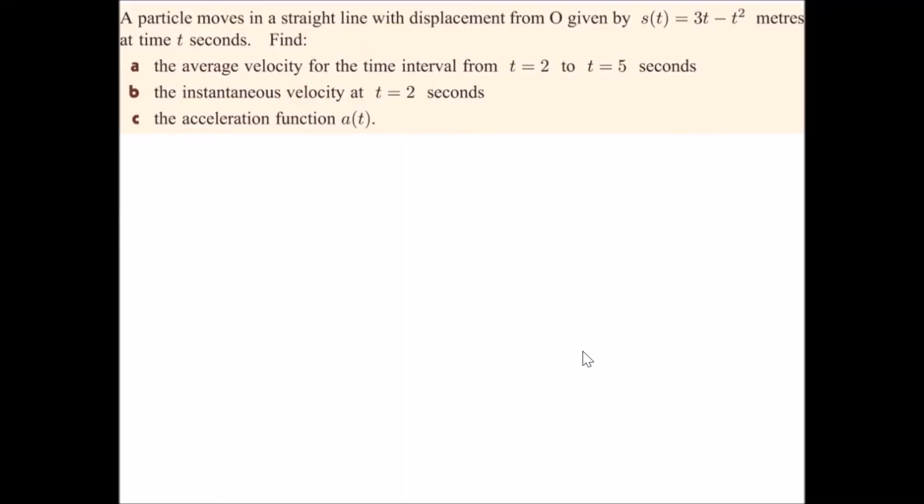Let's look at an example question here. We've got a particle moving in a straight line, given that function for displacement. And part a, the average velocity between 2 and 5 seconds.